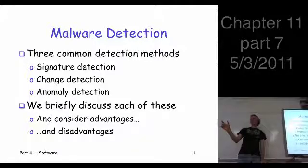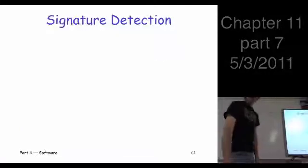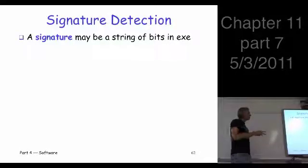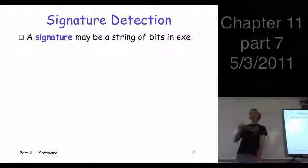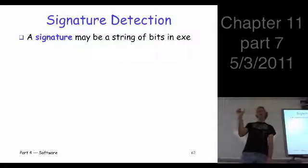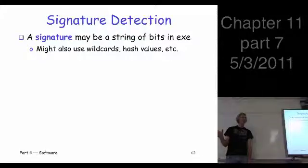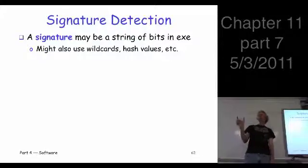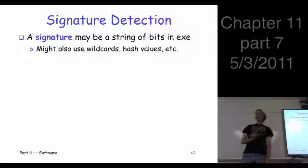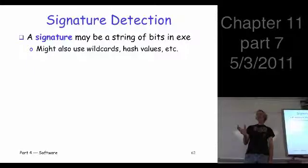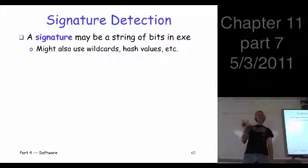What happens if you find that sequence of bits? So, signature detection — a signature is literally a string of bits. It may include wildcards and various other things, but you're really looking for a fixed pattern that you expect to see in some malware. This should be pretty fast looking for a string of bits through the files in your system. Why does it take forever to do a virus scan? You have too many files and too many signatures. You have a lot of signatures and a lot of data to scan, so that's why it takes so long.